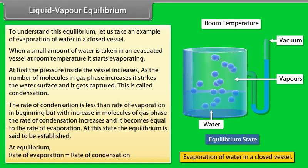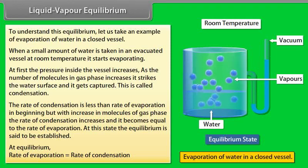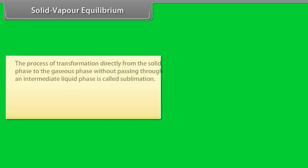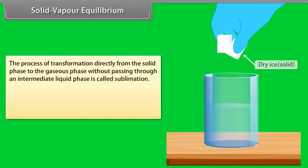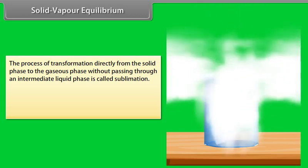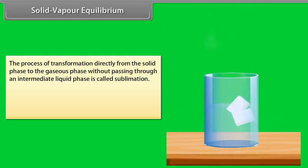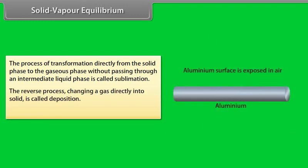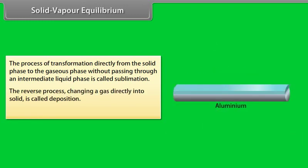Thus, at equilibrium, the rate of evaporation is equal to the rate of condensation. Solid-Vapor Equilibrium: The process of transformation directly from the solid phase to the gaseous phase without passing through an intermediate liquid phase is called sublimation. The reverse process — changing a gas directly into solid — is called deposition. For example, dry ice.